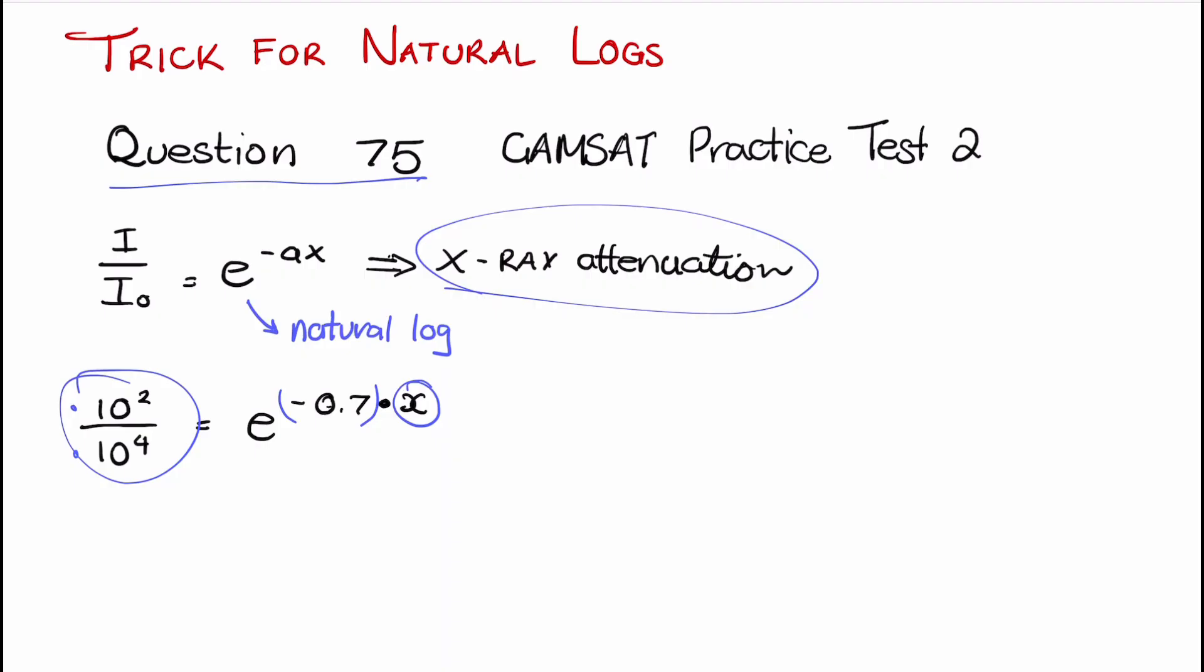So just to reiterate, the easiest way to deal with these natural logs is to convert this ln into something that's more recognizable, and that's the log 10. And the easiest way we can do that is just by multiplying the log 10 by 2.3. So ln(10⁻³) is the same as 2.3 × log₁₀(10⁻³).